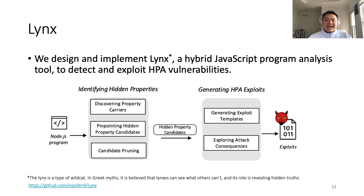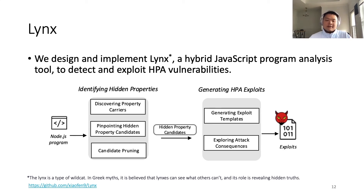To detect and exploit HPA, we propose LYNX, a hybrid JavaScript program analysis tool. The diagram below gives a high-level workflow of LYNX. The tool mainly consists of two parts: the left part is for discovering potential hidden properties, leveraging dynamic flow tracking and static-syntactic analysis; the right part is for detecting harmful hidden properties and generating the exploit automatically. To help future Node.js security research, we will open source our LYNX project at the link below.